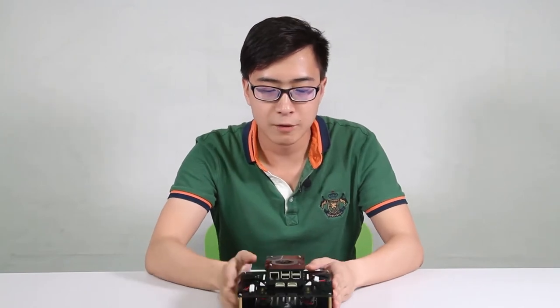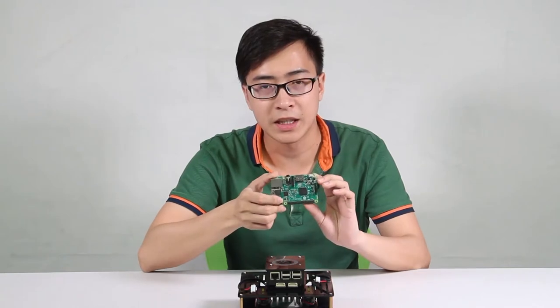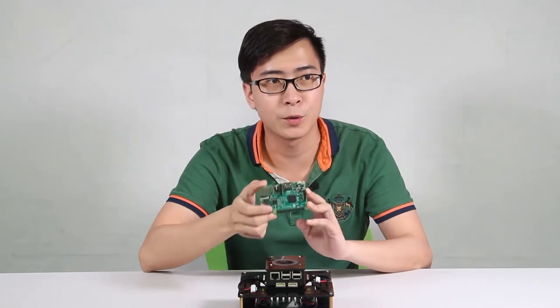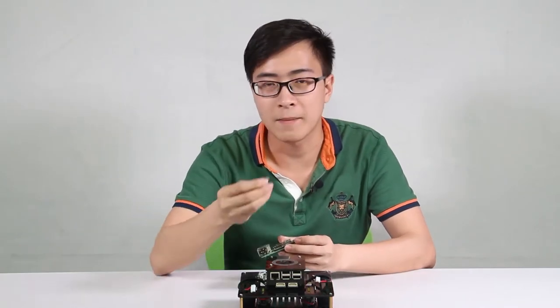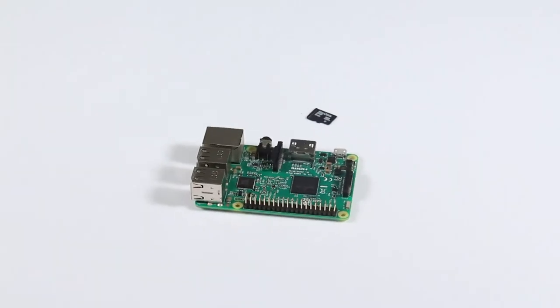Hi everyone, today I'm going to show you how to assemble this PiSmart car. To build this kit, you also need a Raspberry Pi 3. Yes, 3, not 2, not B+ or B. And you also need a microSD card, 8 gigabits.